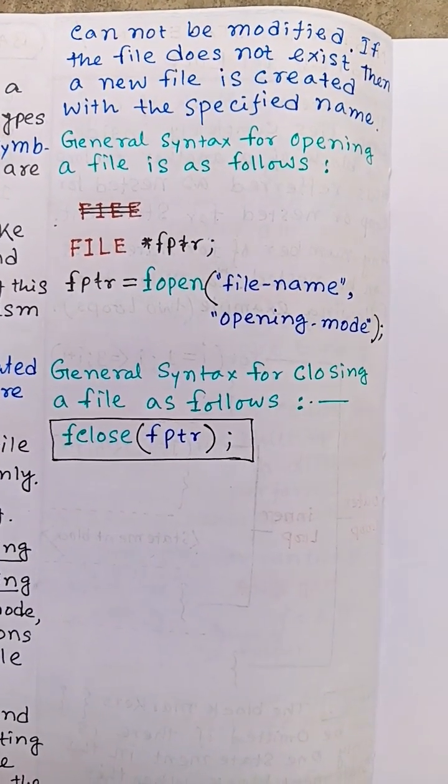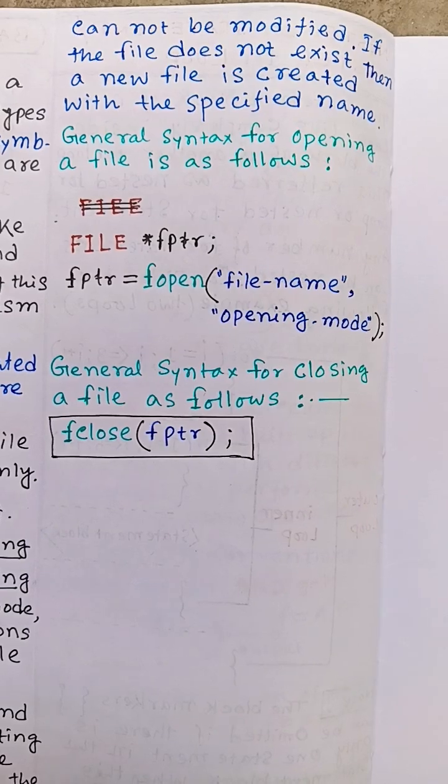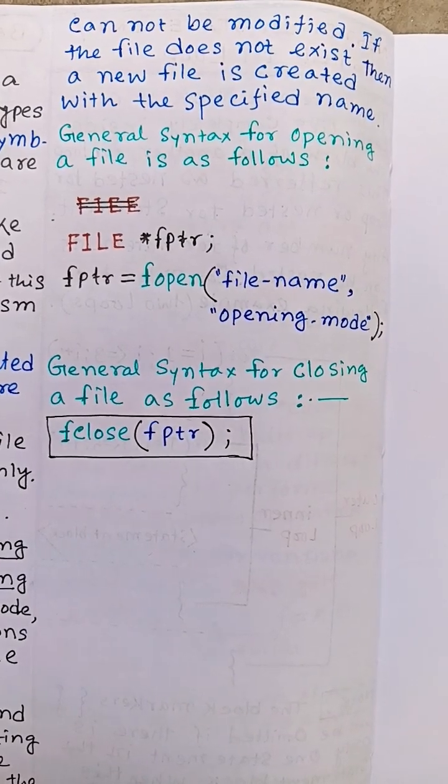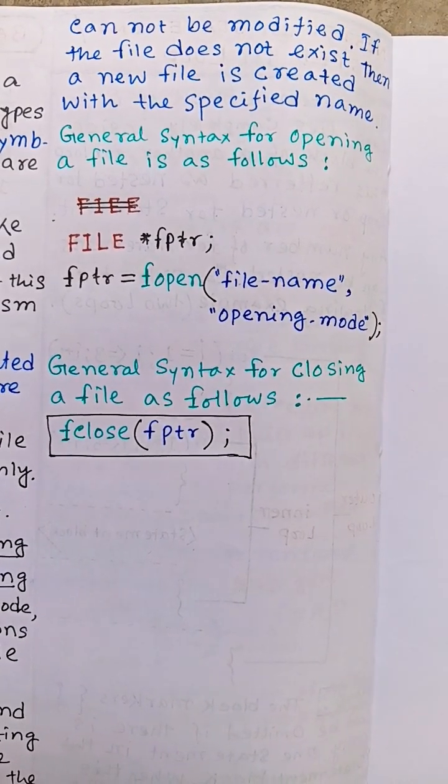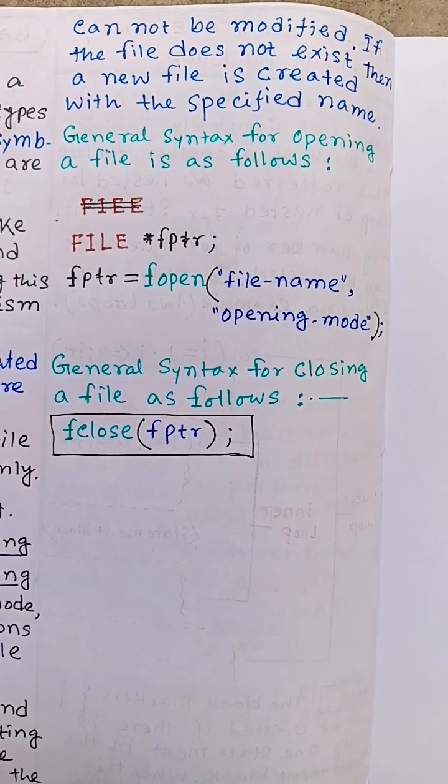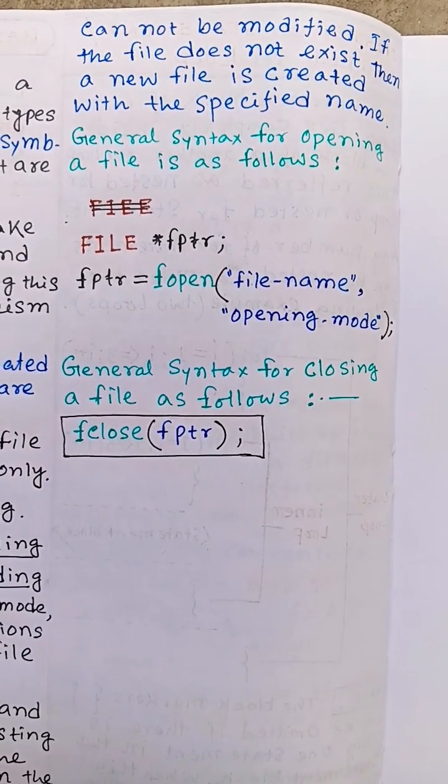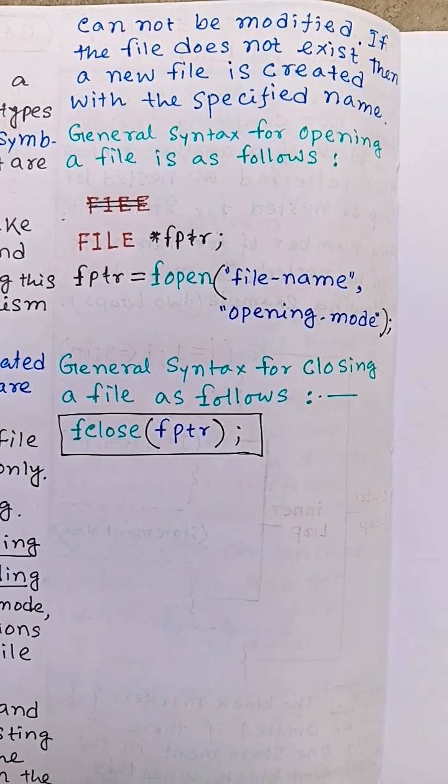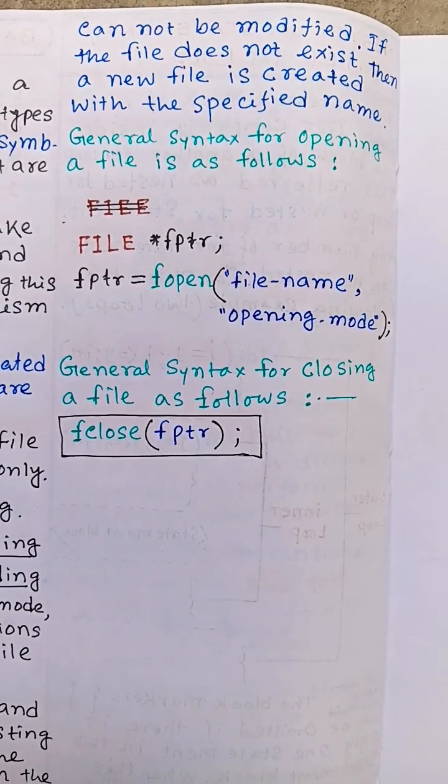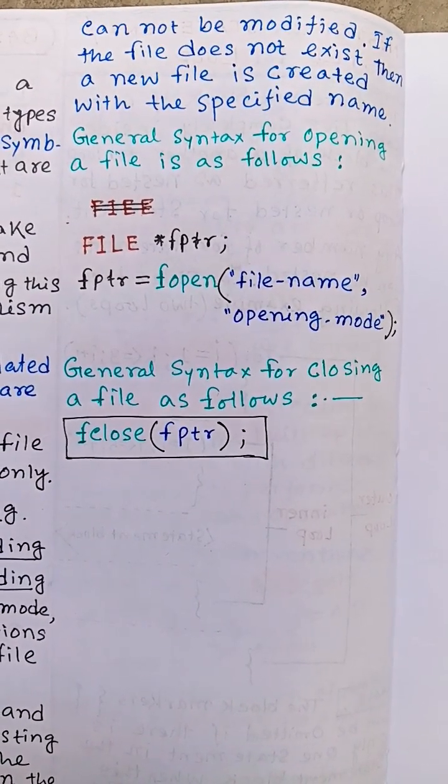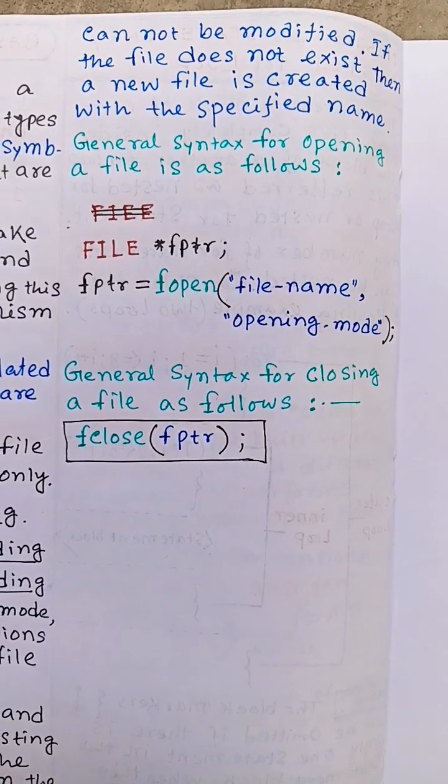FILE is a data type and star fptr is a file type pointer. fptr equals fopen, a function that accepts two arguments: file name and opening mode. File name is the name of the file to be opened.